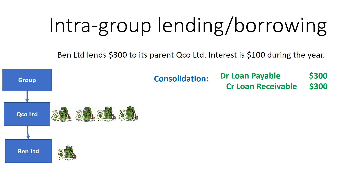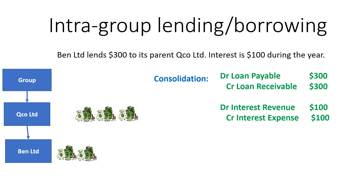Now dealing with the interest of $100 during the year: QCO passes $100 back to Ben Limited, so the group still has $500 — it's just sitting in different legal entities. Ben Limited would have debited cash and credited interest revenue. So we debit interest revenue by $100 to offset Ben's recognition, because there's no increase in resources. We also credit interest expense, because QCO Limited would have debited interest expense and credited cash. We haven't lost anything as a result of this transaction, so we shouldn't recognise any expense.